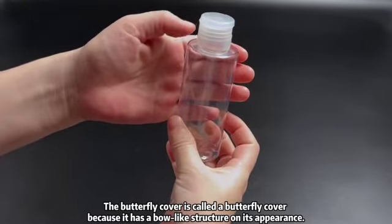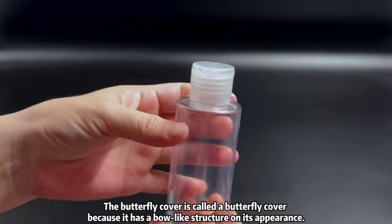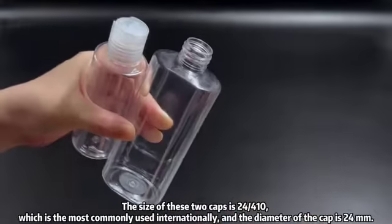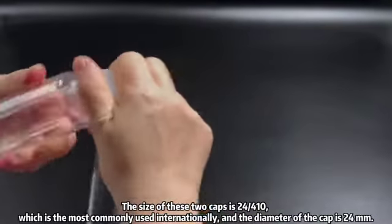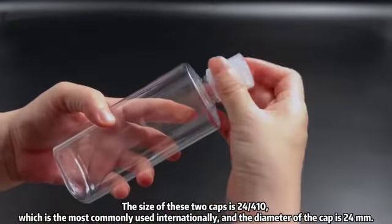The butterfly cover is called a butterfly cover because it has a bow-like structure on its appearance. The size of these two caps is 24/410, which is the most commonly used internationally, and the diameter of the cap is 24 millimeters.